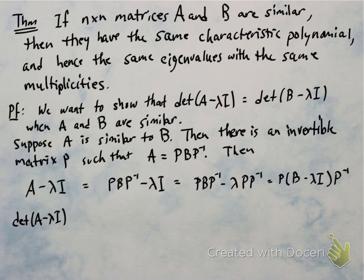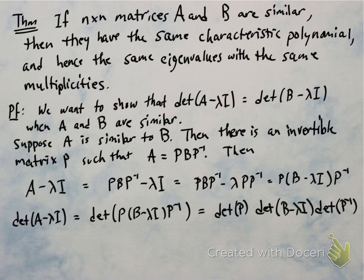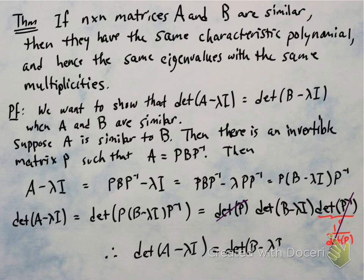And then we just take determinant. So the determinant of A minus lambda I, this is the characteristic polynomial for A. This is equal to the determinant of P times the quantity B minus lambda I times P inverse, and now we're going to use the multiplicative property of determinant. So that's determinant P times the characteristic polynomial of B times determinant P inverse. And determinant P inverse, remember, is just 1 over determinant P. And so those are scalars that cancel, and therefore determinant A minus lambda I is determinant B minus lambda I. So this shows that the characteristic polynomials are the same.